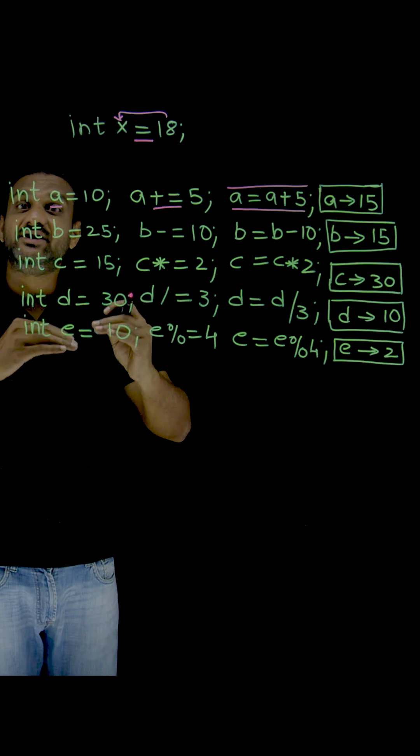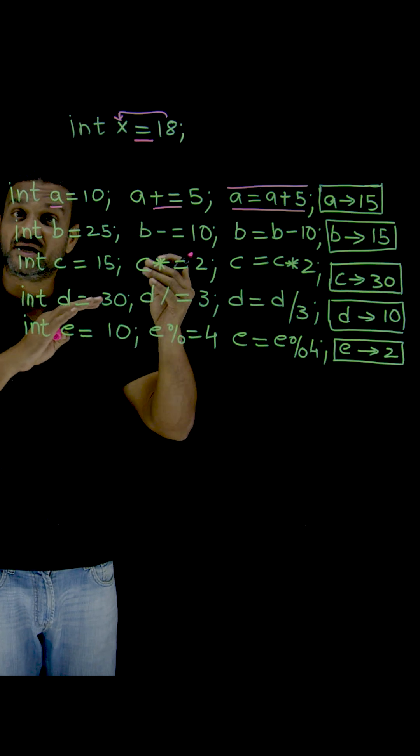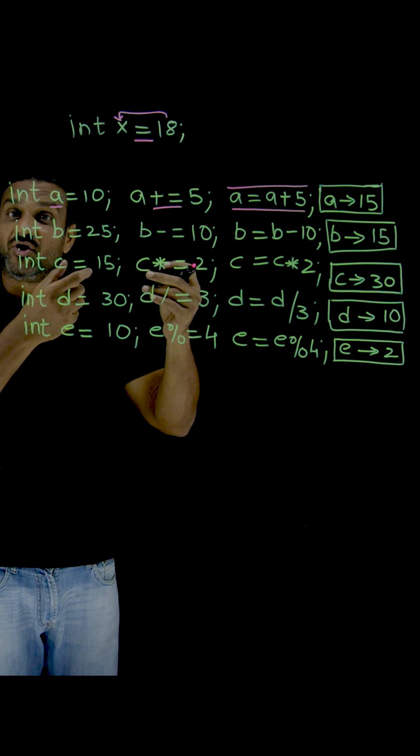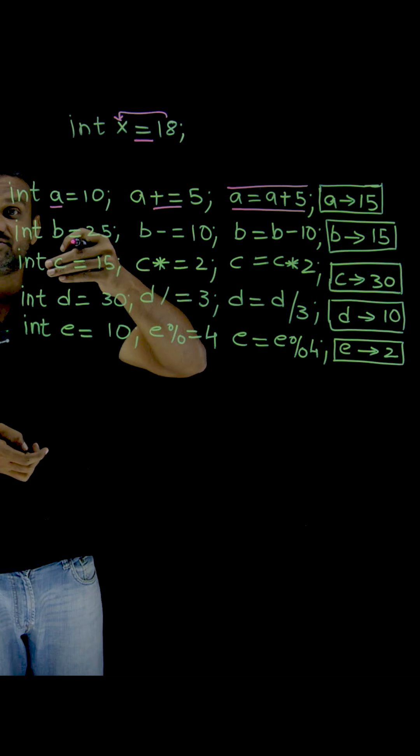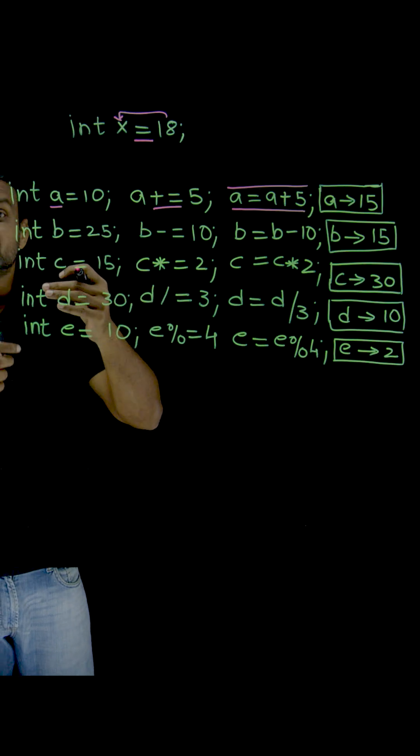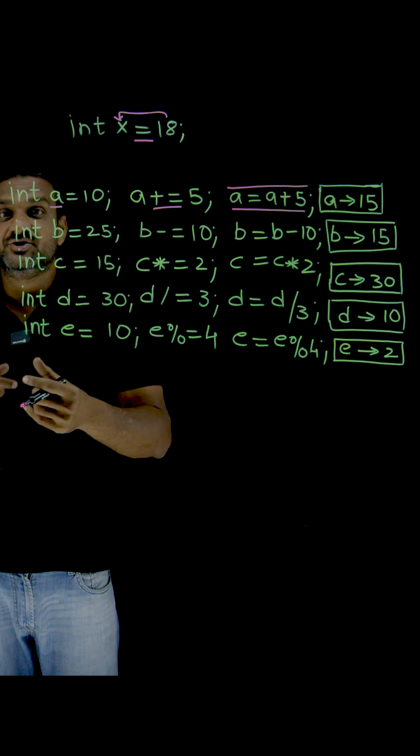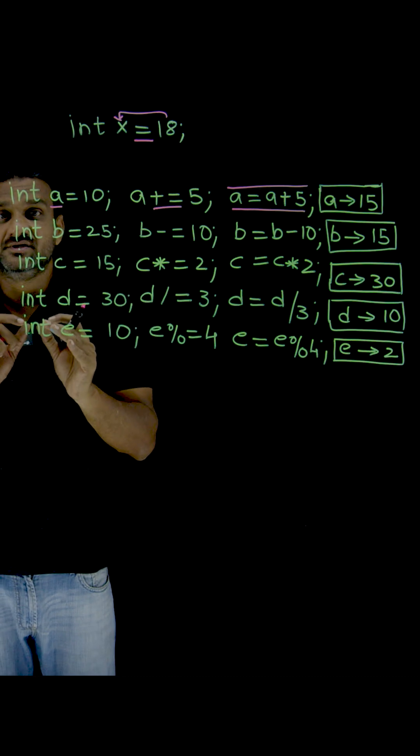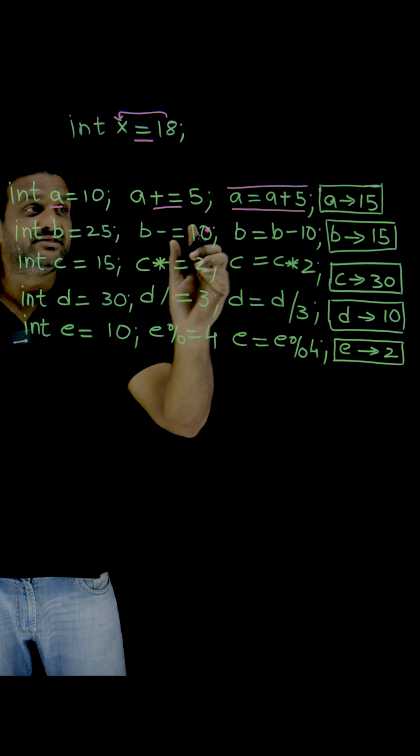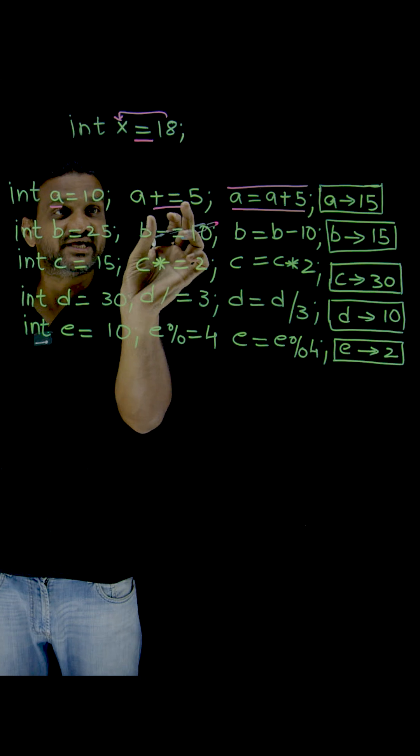...to the existing value of a variable, and you want that result to be assigned to that existing value, that is where these operators are used. This is very simple and easy to understand. This operator is a shorthand method for this entire operation.